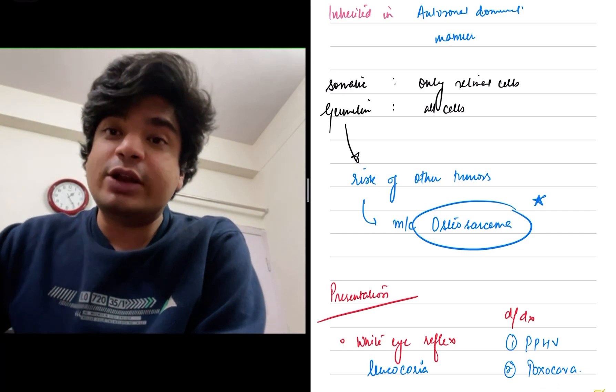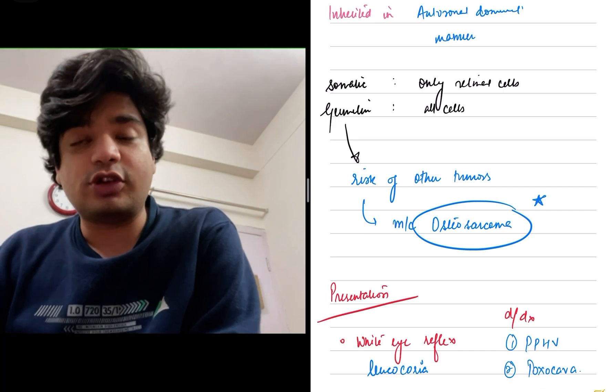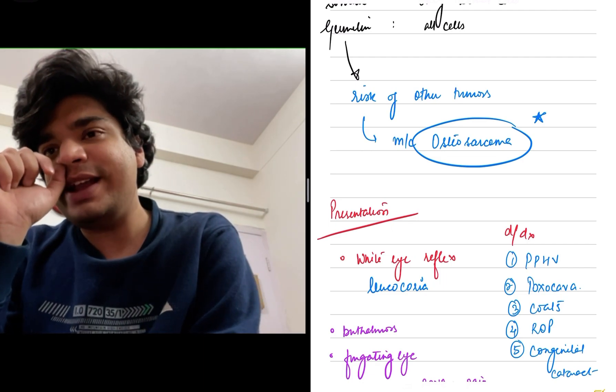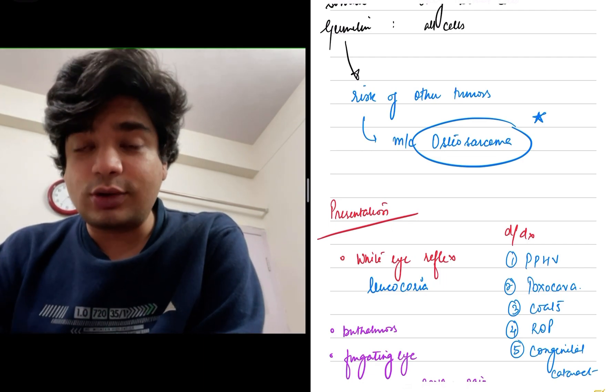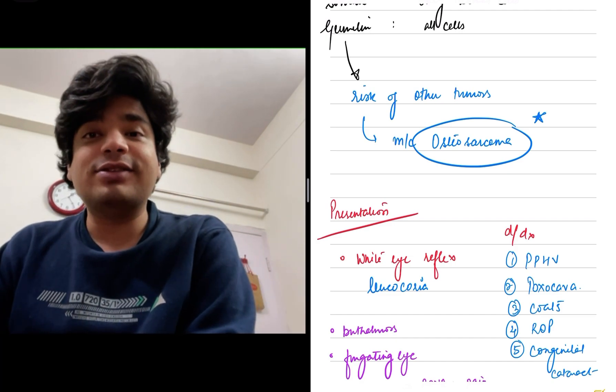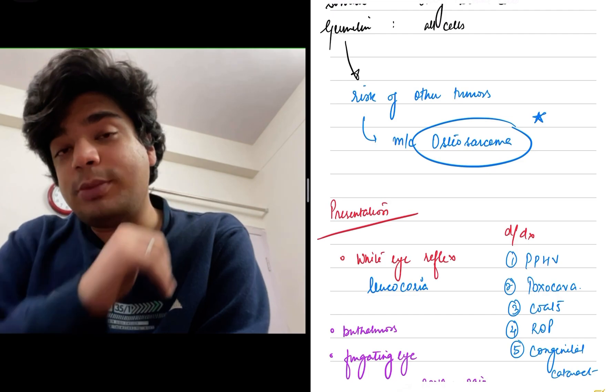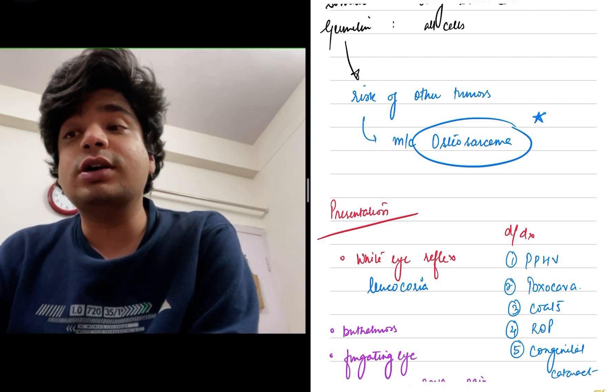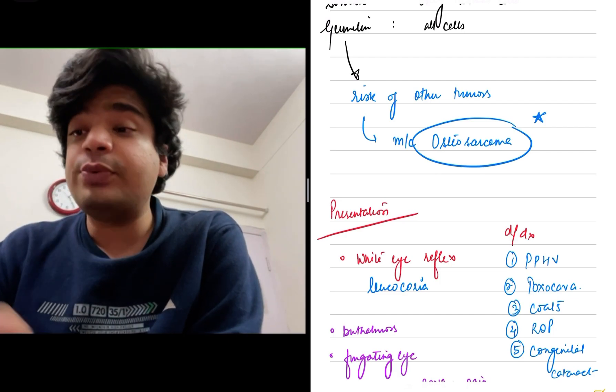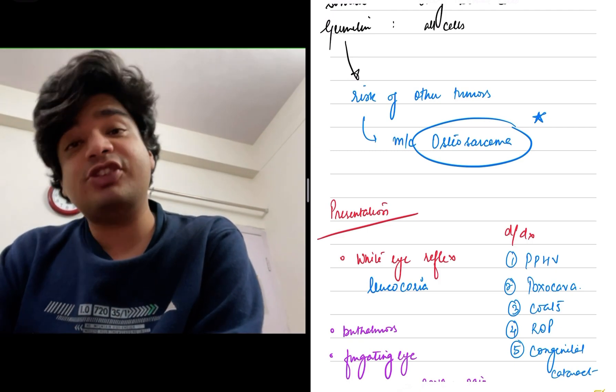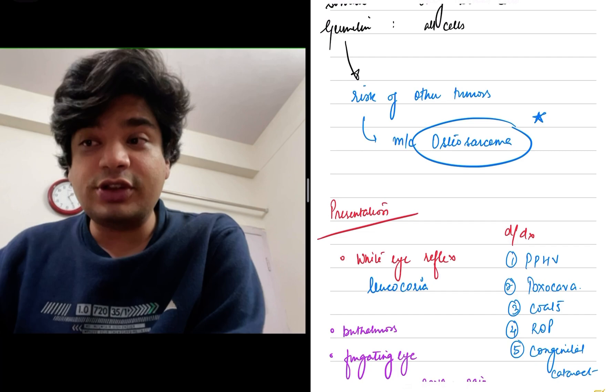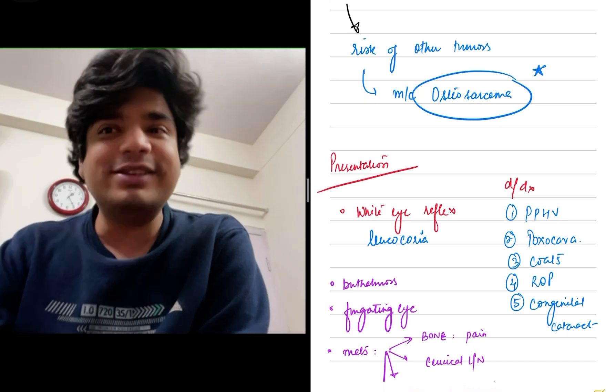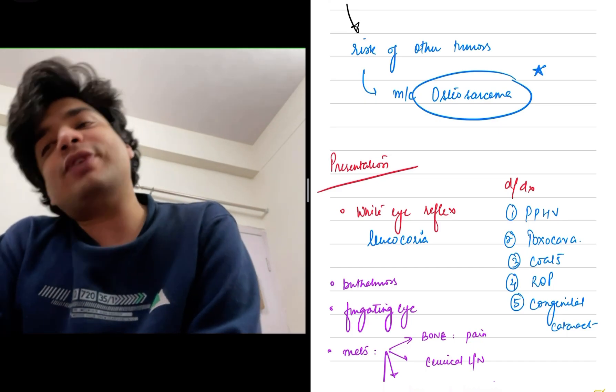How do they present? The most common presentation is white eye reflex—a white, shiny object in the eye of the child. We need to know the differential diagnosis and non-malignant causes. The most common infectious ones are Toxocara, persistent PHPV, Coats disease, retinopathy of prematurity, and congenital cataract. These are the differential diagnoses you should remember. All these causes, including retinoblastoma, are a cause of leukocoria or white eye reflex.